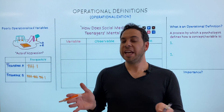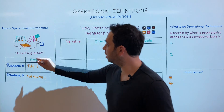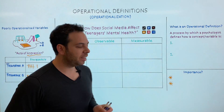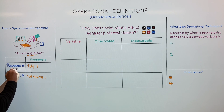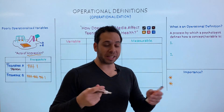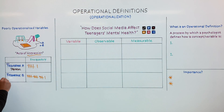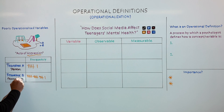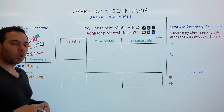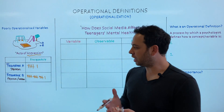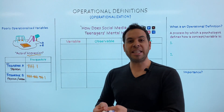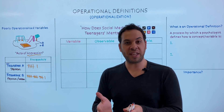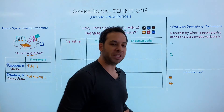Why? It's because both of them didn't have a clear definition of what aggression is. Researcher A defined aggressiveness as only physical acts — punching, kicking, and hitting. But researcher B defined aggression as both physical acts and also verbal acts, like swearing, yelling, or shouting. So if you don't clearly define your variables, you're going to have inconsistent results, and researchers are going to be looking for different things.